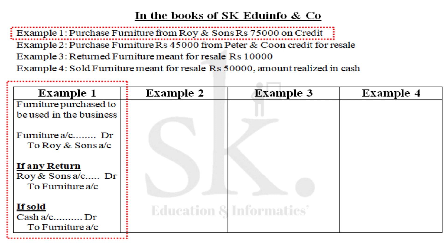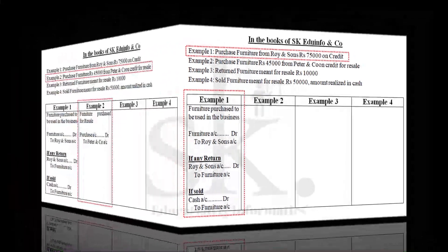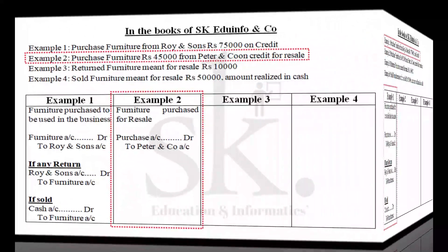Continuing with Example 1: if we are returning furniture that was previously purchased for use in the business, the entry is Roy and Sons Account Debit to Furniture Account. If we sell this furniture and receive cash, the entry is Cash Account Debit to Furniture Account.